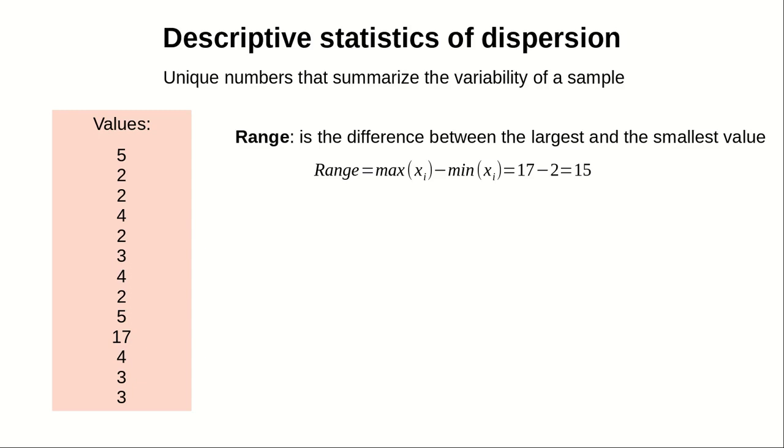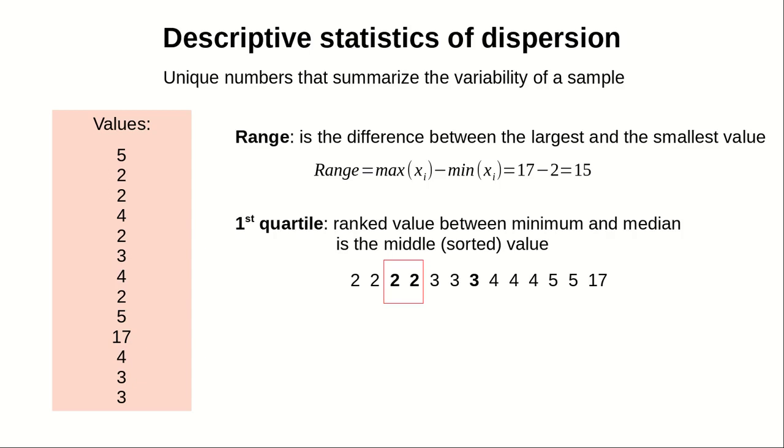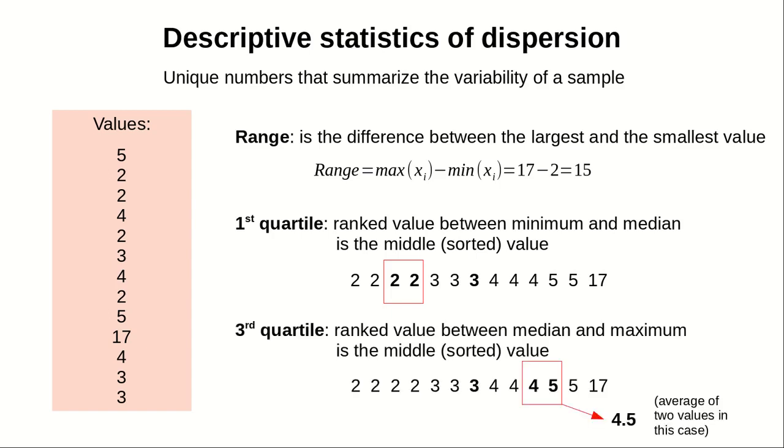You remember we compute the median, which is the value in the middle of the first half of the sorted values, and we call it the first quartile. Likewise, we can find the value in the middle of the second half of the values, and we call it the third quartile. If you have a tie and you have two positions, what you take is the average between the two numbers. This first and third quartile and the range, they don't look very interesting now. But when we go into plots, you will see that actually they are very handy.